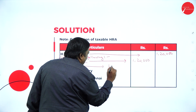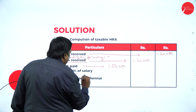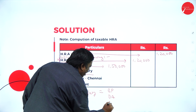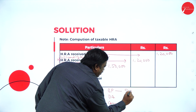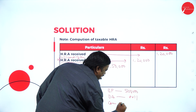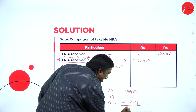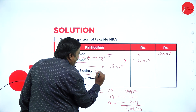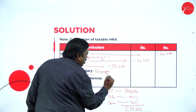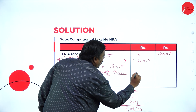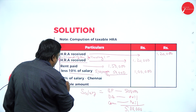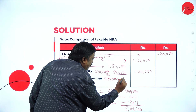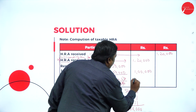Least of the following — first: HRA received, one lakh twenty thousand. Second: Rent paid minus 10% of salary. Salary means basic pay, DA, and commission. Basic pay is five lakh, DA is nil, commission is nil, so salary is five lakh. 10% of five lakh is fifty thousand. Rent paid one lakh fifty thousand minus fifty thousand equals one lakh. Third: 50% of salary because residing in Chennai — five lakh into 50% equals two lakh fifty thousand.